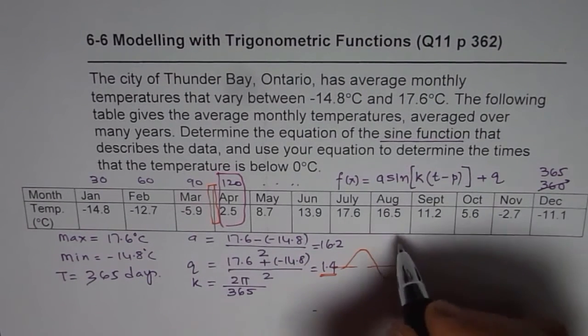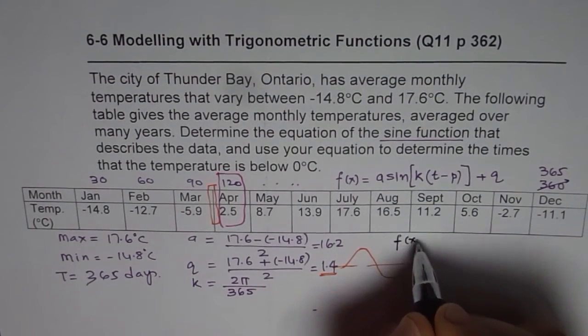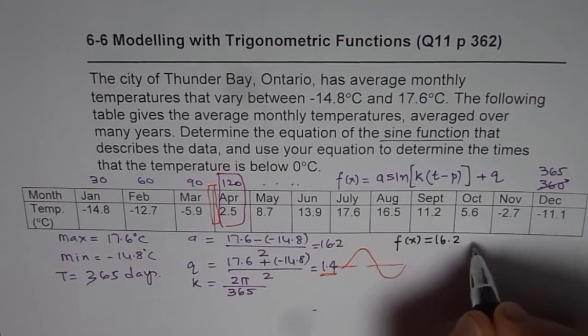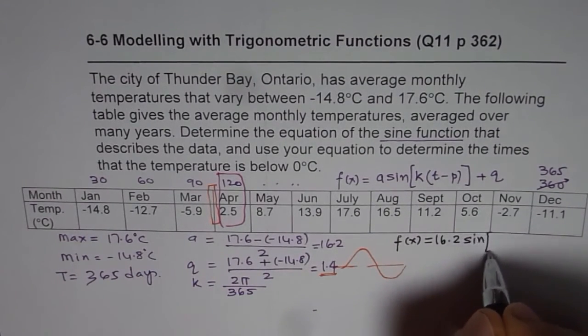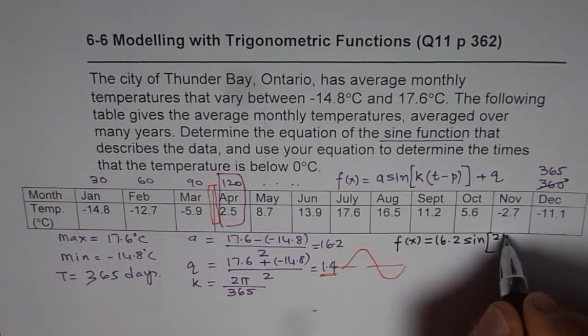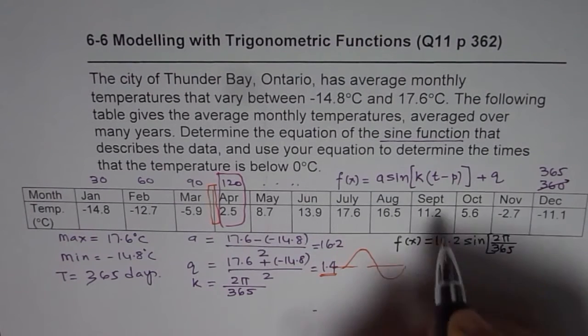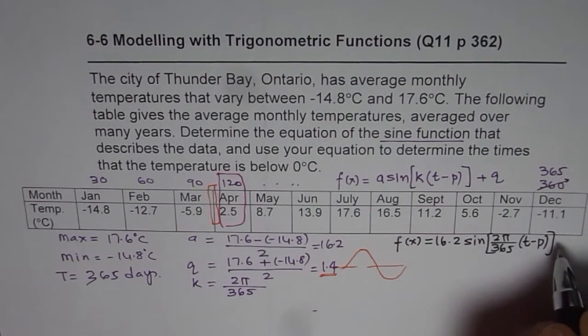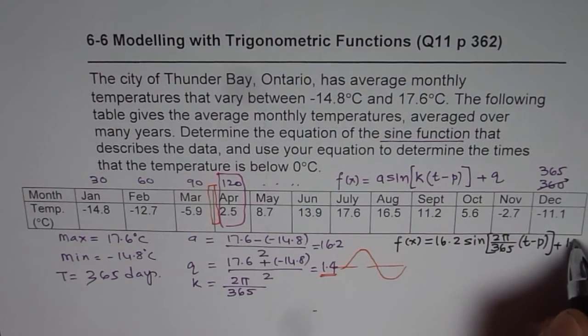So, we really have an equation which I could write as f(x) equals to a is 16.2 sine of k is 2π over 365, perfect t. So I am keeping t minus p as such now, plus q which is 1.4.